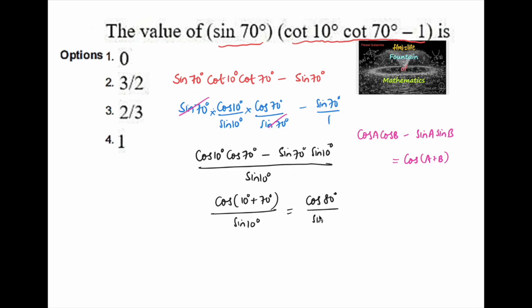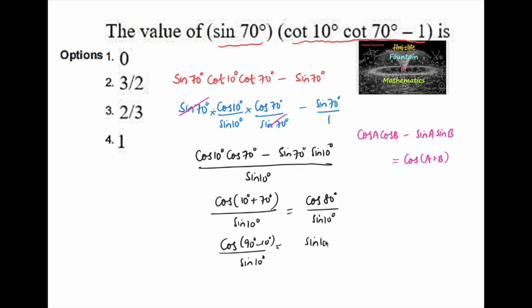Since 80 and 10 are complementary angles, we can write cos 80 as cos(90 minus 10), divided by sine 10 degrees. Since cos(90 minus theta) equals sine theta, this becomes sine 10 degrees divided by sine 10 degrees, which equals 1. So option 4 is the answer.